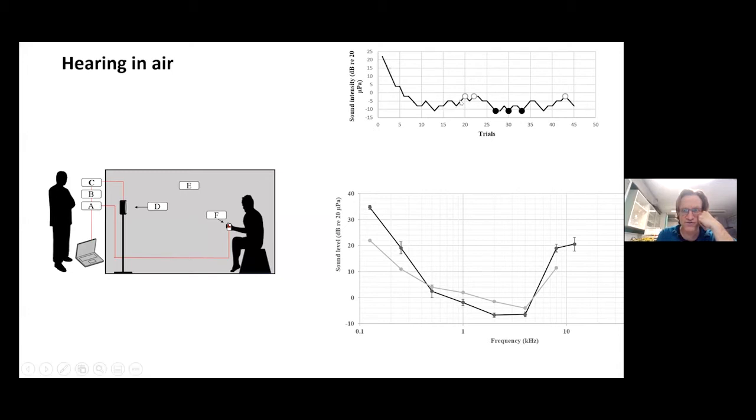And then on top you can see a staircase where you lower the sound intensity if you answer you can hear something, and if you cannot hear it, you increase it again. Then you create this staircase and start to oscillate around the threshold. Then you can repeat that for a bunch of frequencies, so you obtain an audiogram like this.